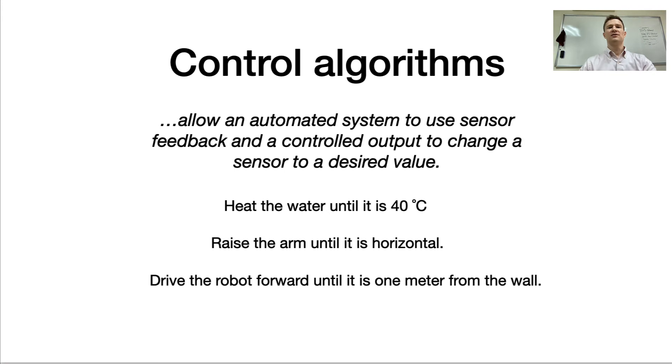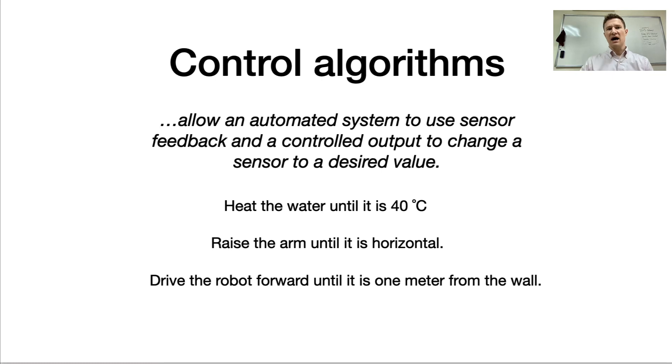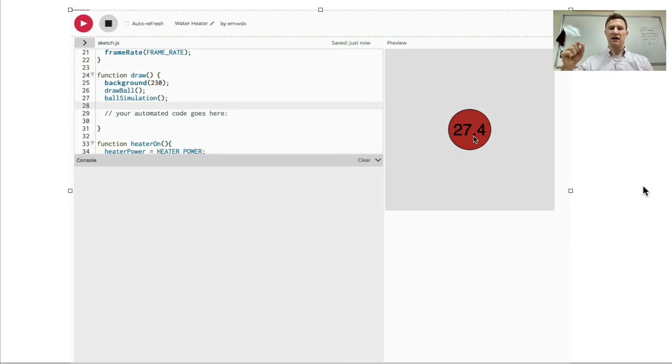What I've done for you today is I've created two situations where you can start thinking through the idea behind a control algorithm. The first is a container that has the temperature. Where you click on the container, you turn on the heater, which increases the temperature. And the goal here is to try to keep that temperature as close to 40 degrees Celsius as you can.